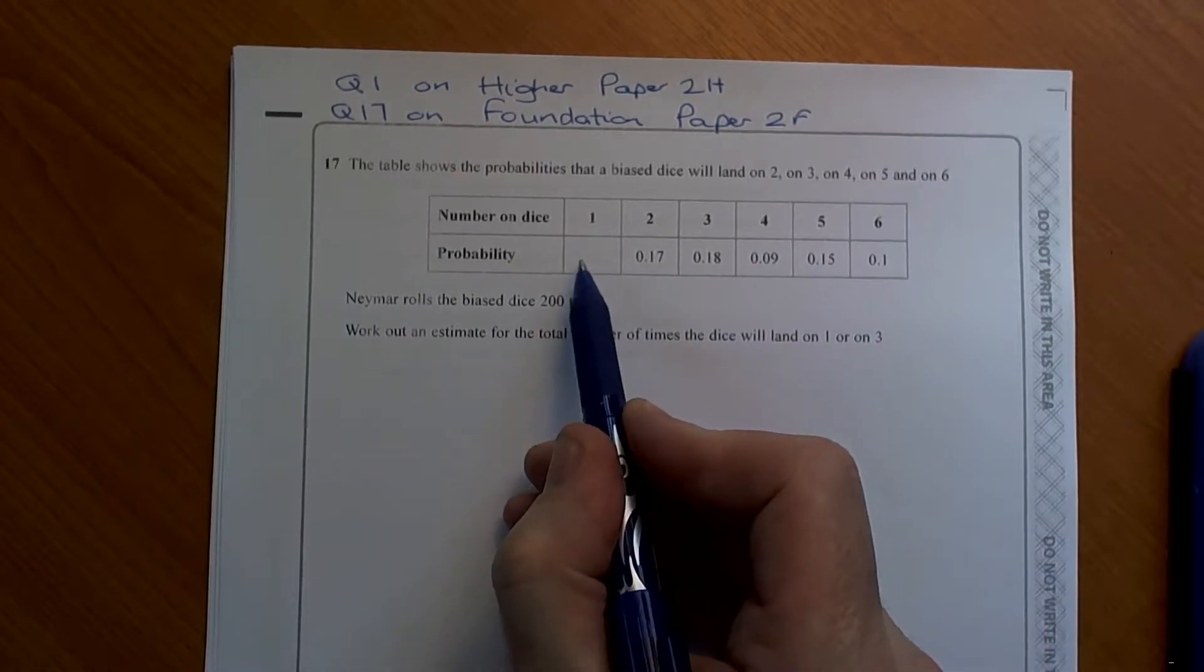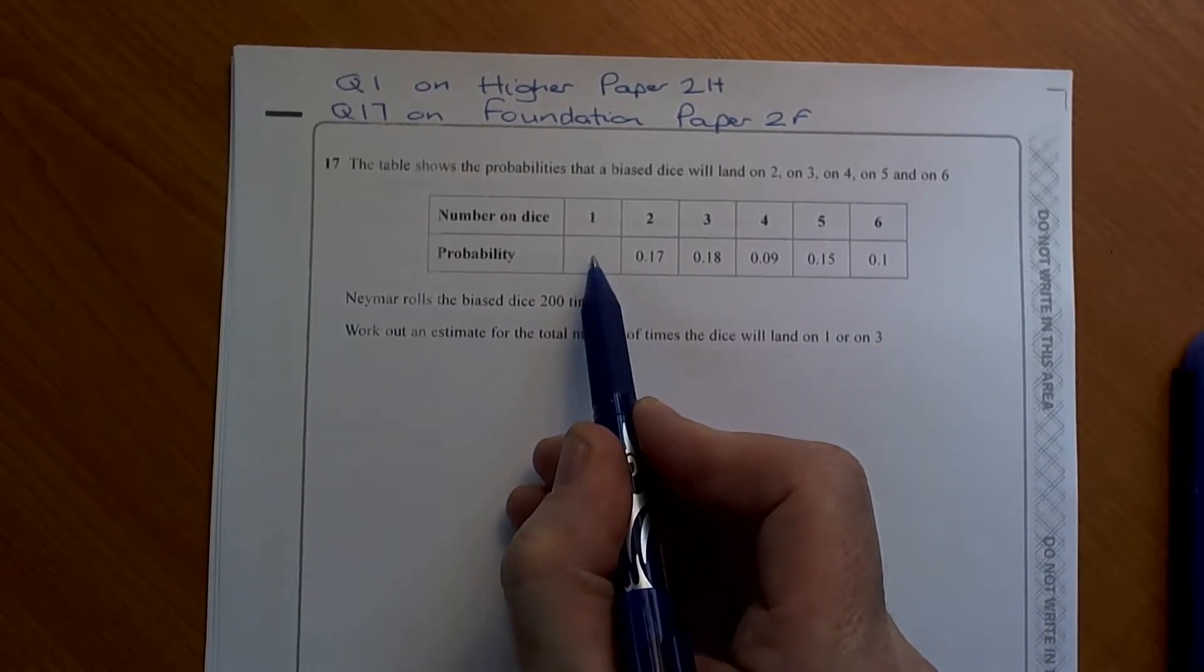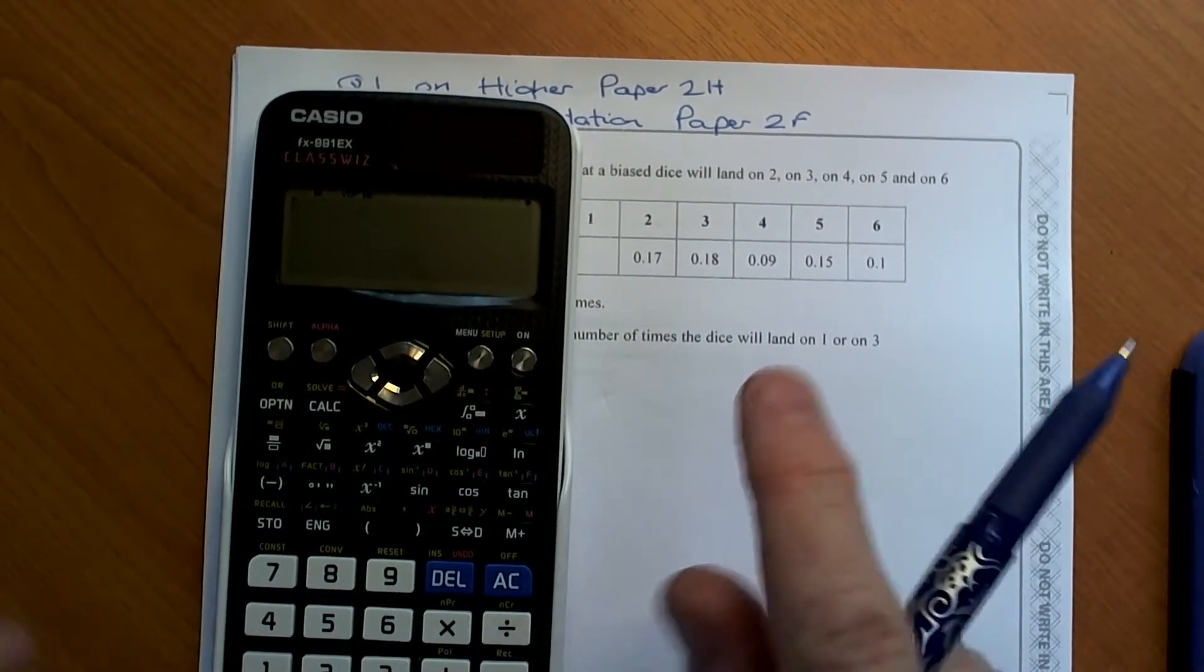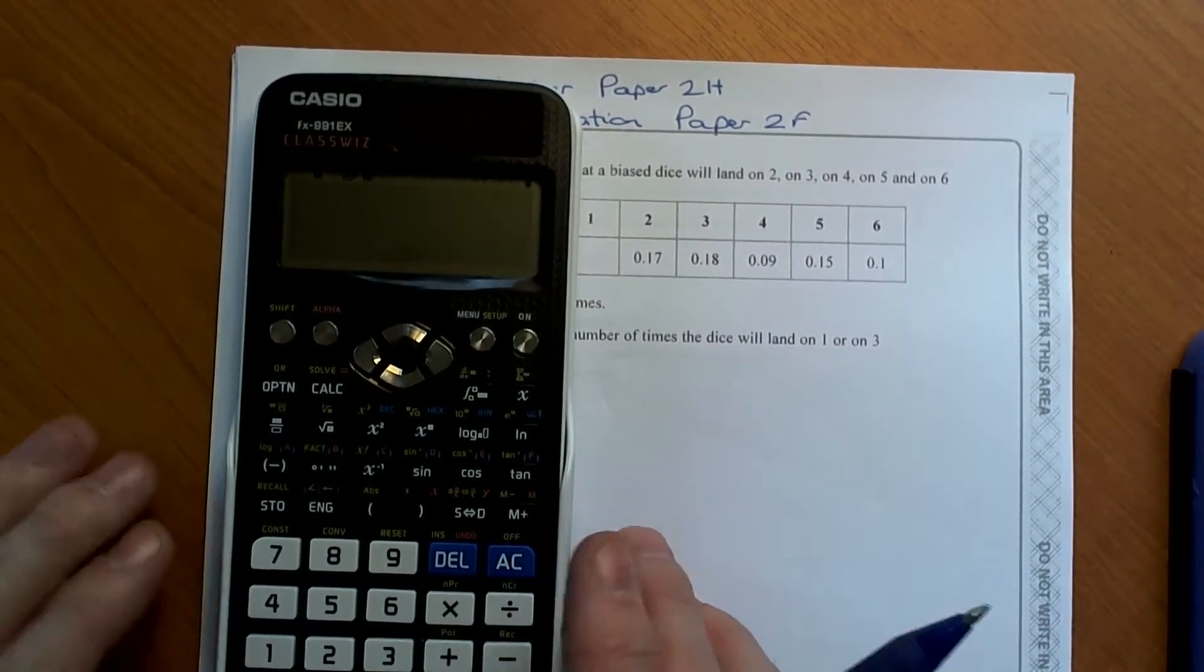Well the first thing we need to do is find this missing probability. So we need to take these probabilities in the table and add them up and take them away from a whole one.